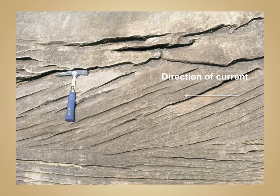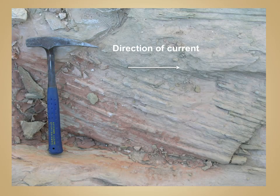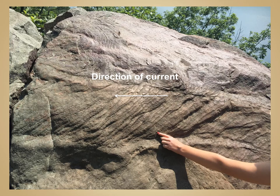Similarly, in this image the crossbeds are also inclined to the left, indicating current direction from right to left. Notice in this image our crossbeds are inclined in the opposite direction, to the right, indicating current flow from left to right. Although crossbeds are most commonly found in sedimentary rocks, sometimes they can be preserved in metamorphic rocks, such as here, where crossbeds have been preserved in a quartzite.